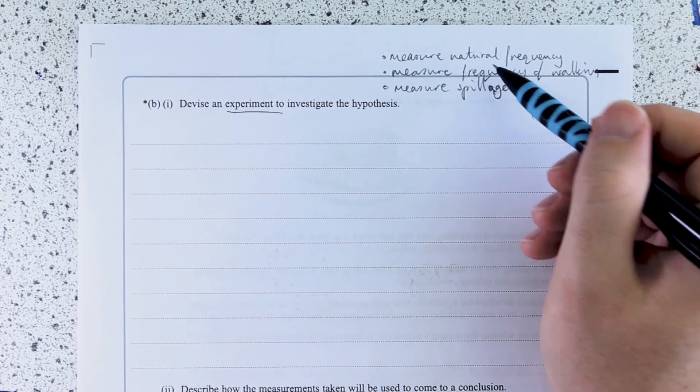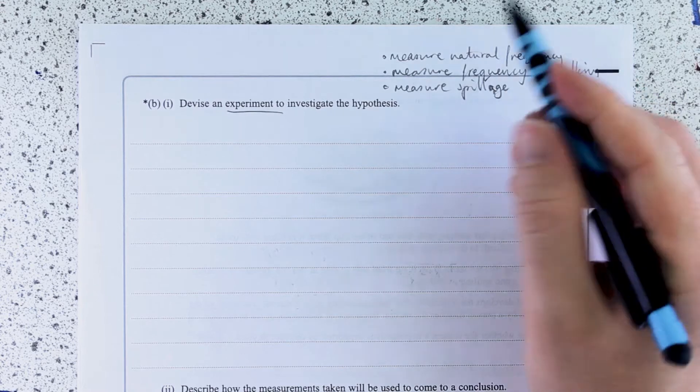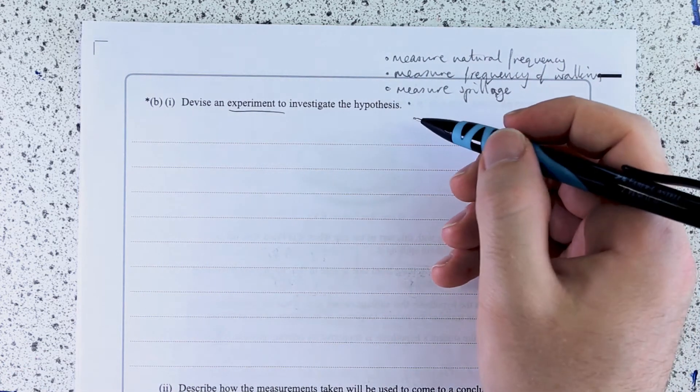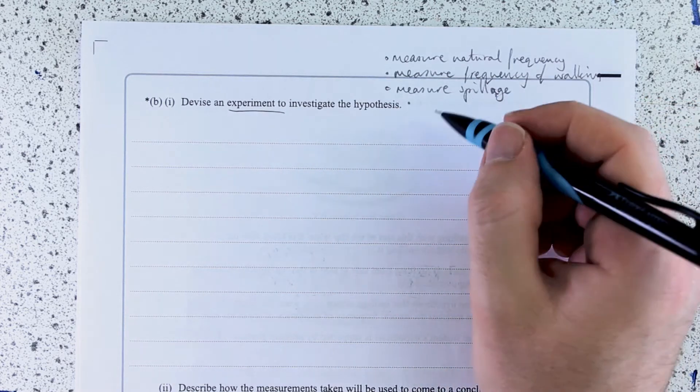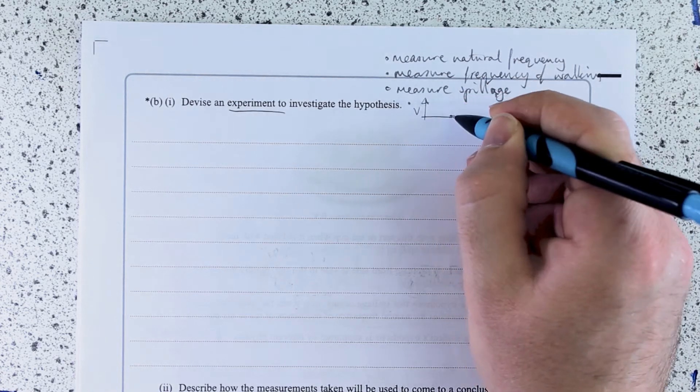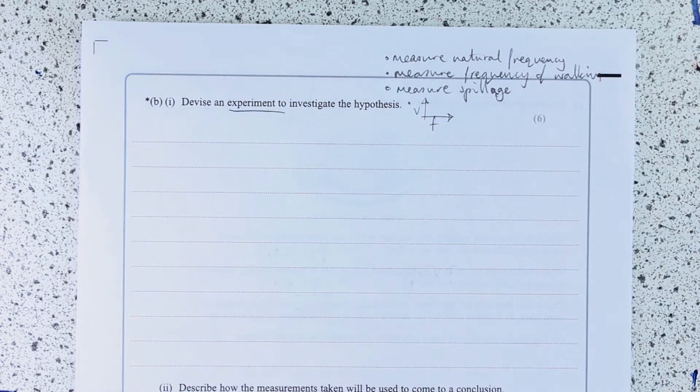And then I'm thinking, well, what am I going to do with that data? So, I'm thinking graph. But the graph's really not really going to help me with this here. I could plot volume of spillage against frequency of walking. That would be an acceptable way to do it.